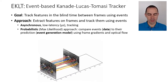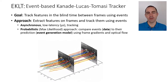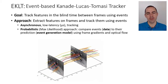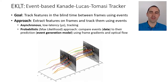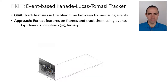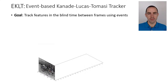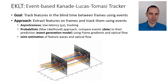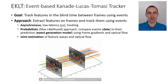The approach follows a maximum likelihood formulation: we compare events to a prediction using the event generation model studied in previous videos. This prediction uses frame gradients and optical flow. It performs joint estimation of both the optical flow and the feature warps — unlike the Zhu tracker where these were done independently. The goal is to obtain tracks from events and frames.